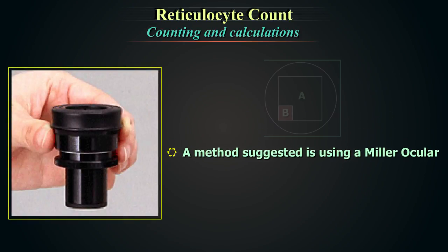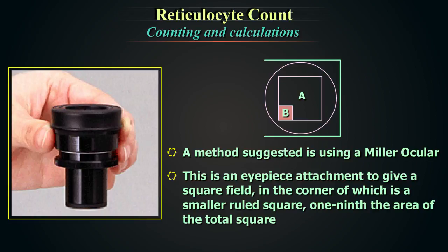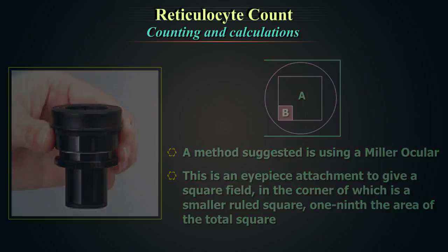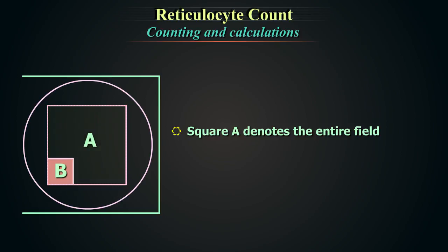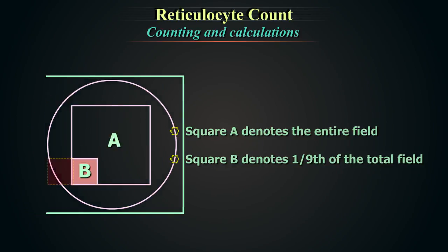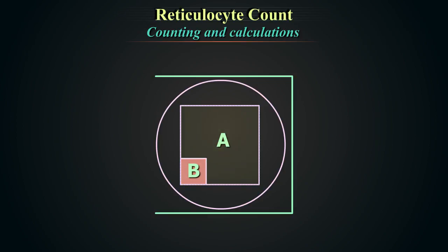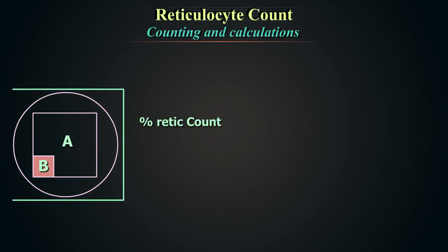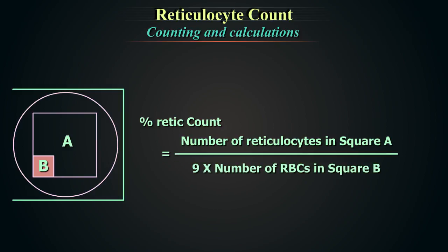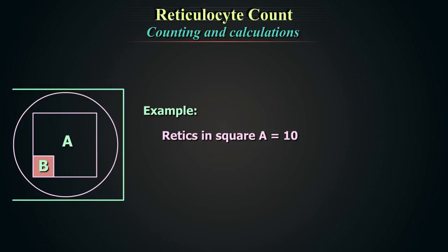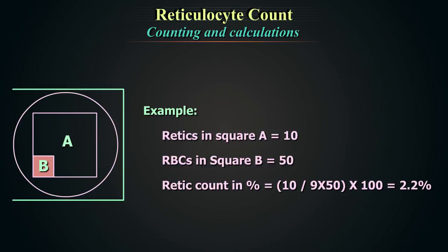A method suggested is using a Miller's ocular — an eyepiece attachment that gives a square field in the corner of which is a smaller ruled square, 1/9th the area of the total square. Square A denotes the entire field and square B is 1/9th of the total field. Red blood cells are counted in square B only, but reticulocytes are counted in the whole field. The percentage reticulocyte count equals: (reticulocytes in square A) / (9 × RBCs in square B) × 100. For example, if retics are 10 in square A and RBCs are 50 in square B, the retic count = 10/(9 × 50) × 100 = 2.2%.